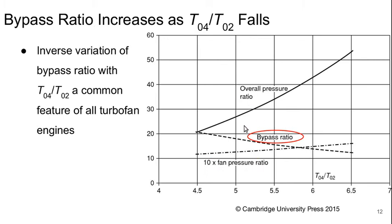The bypass ratio, on the other hand, increases as T0.4 over T0.2 goes down. So there's basically an inverse variation of bypass ratio with T0.4 over T0.2, and this is a common feature of all turbofan engines.